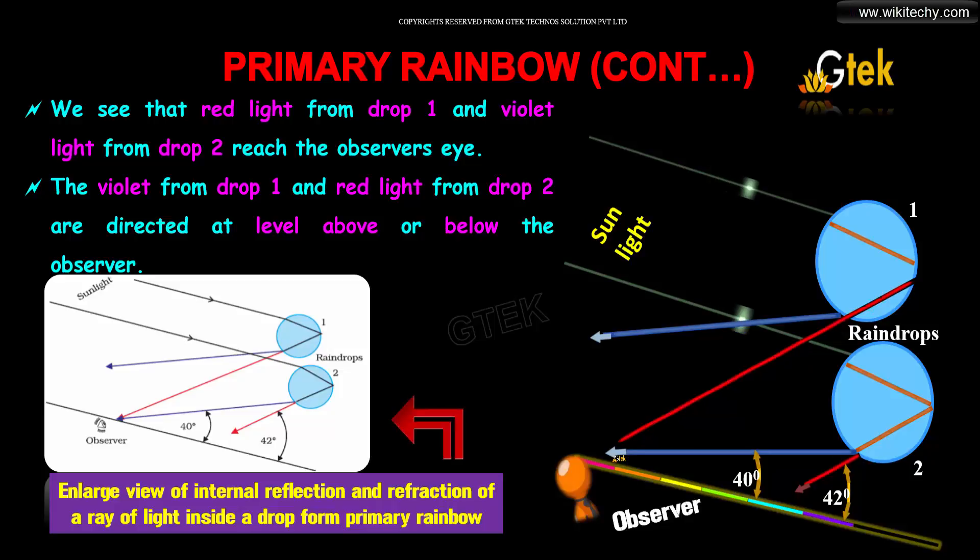The violet from drop 1 and red light from drop 2 are directed at levels above and below the observer.